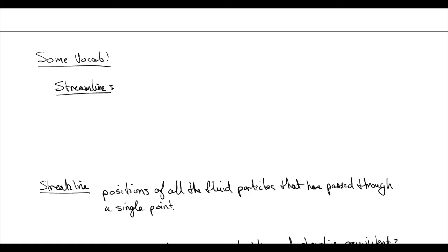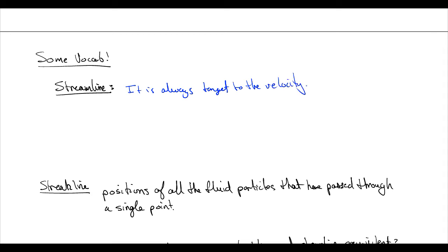We're talking about fluid kinematics and some vocabulary. The first term is a streamline. What makes a streamline a streamline is that it is always tangent to the velocity. We're doing engaged learning here, so when you're filling out your own notes, try to rephrase what's written and add extra notes.